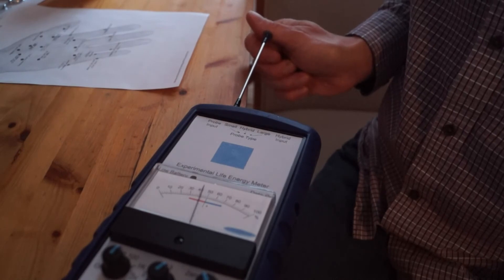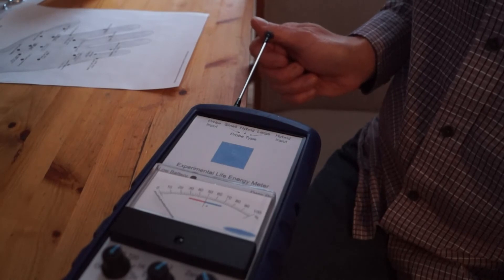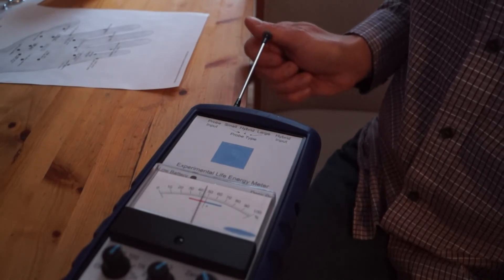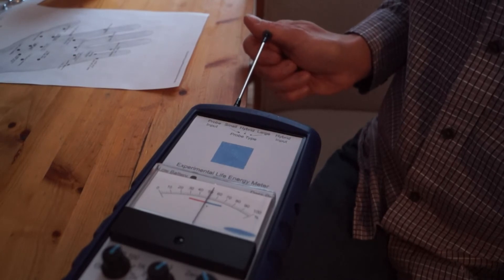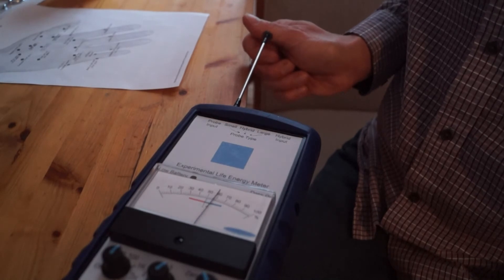Here you can see if we move around the acupuncture point, the reading starts to go down. But as we approach the acupuncture point, the reading goes up until it reaches the maximum right on the spot.